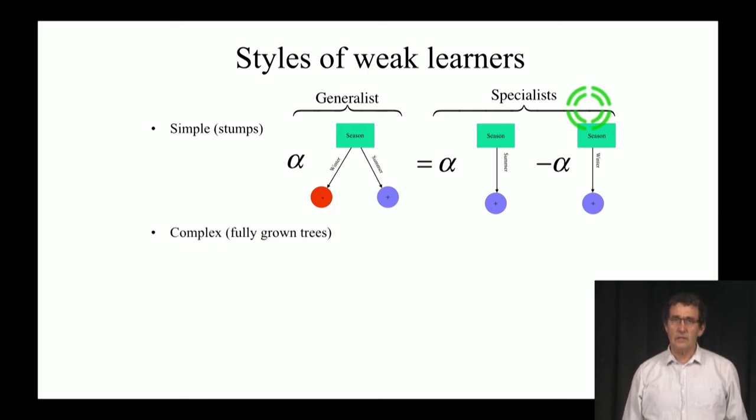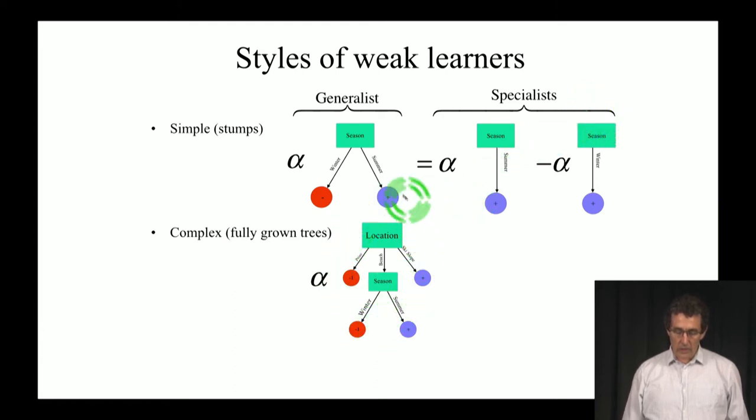Another style that is very popular is to use boosting on top of decision trees. Here, our weak learner is not just a stump, but it's a bigger decision tree. Maybe fully grown, maybe not fully grown, but in any case, more complex. So the weak learner in this case is actually not that weak, but experience has shown that using boosting on top of decision trees improves the performance significantly.